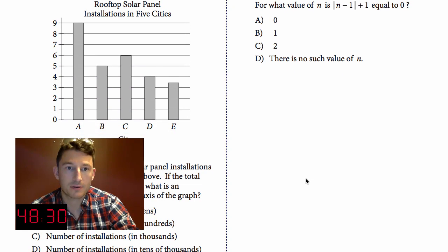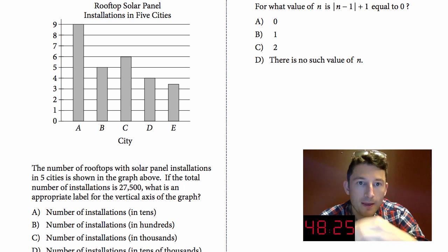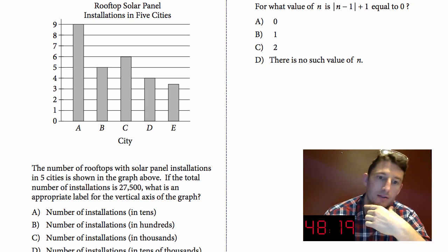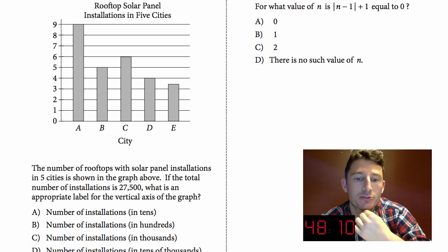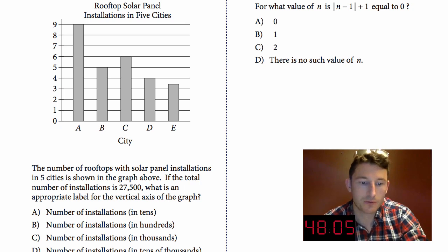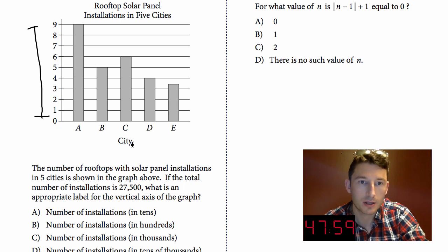Number seven: Rooftop solar panel installations in five cities. The number of rooftops with solar panel installations in five cities is shown in the graph above. If the total number of installations is 27,500, what is an appropriate label for the vertical axis of the graph? So far it looks like they want us to figure out what we can call it.